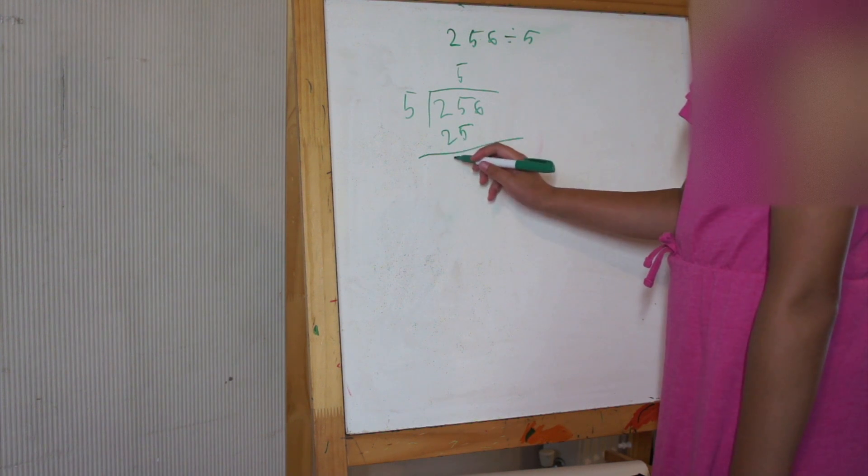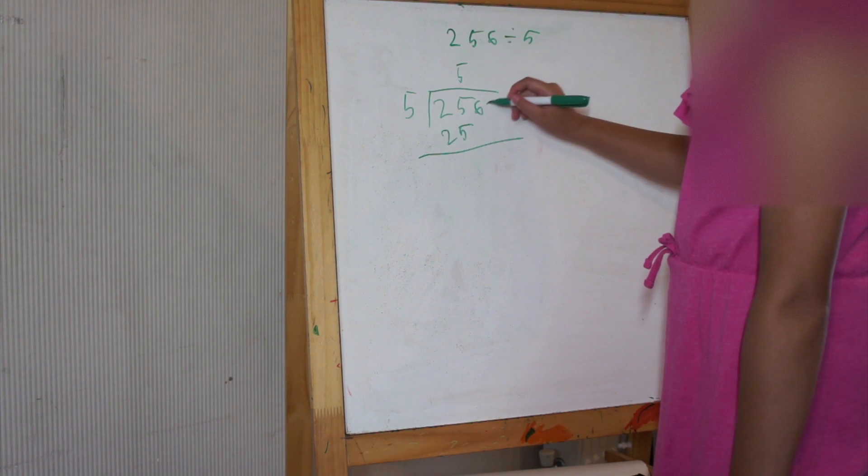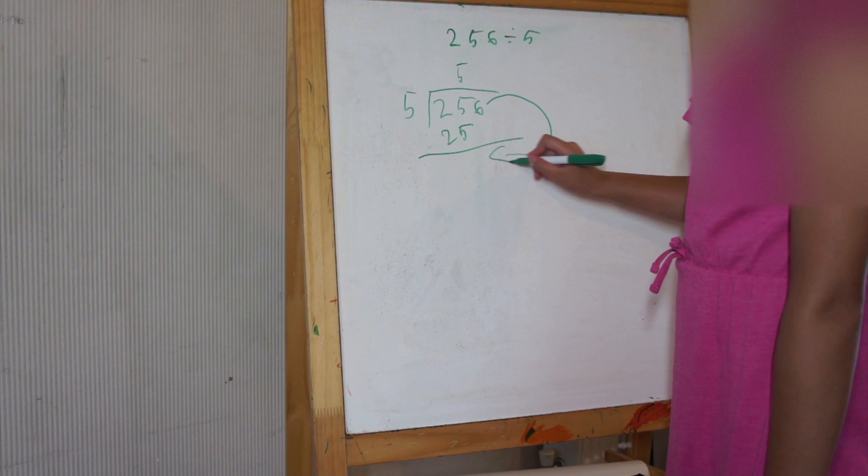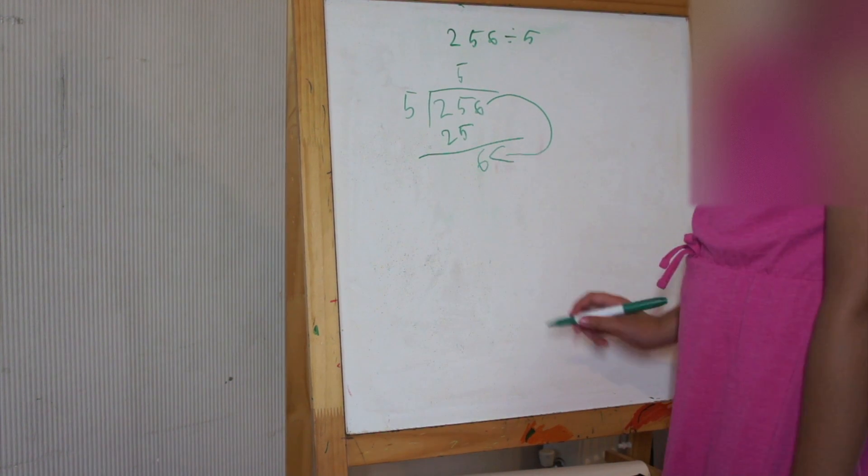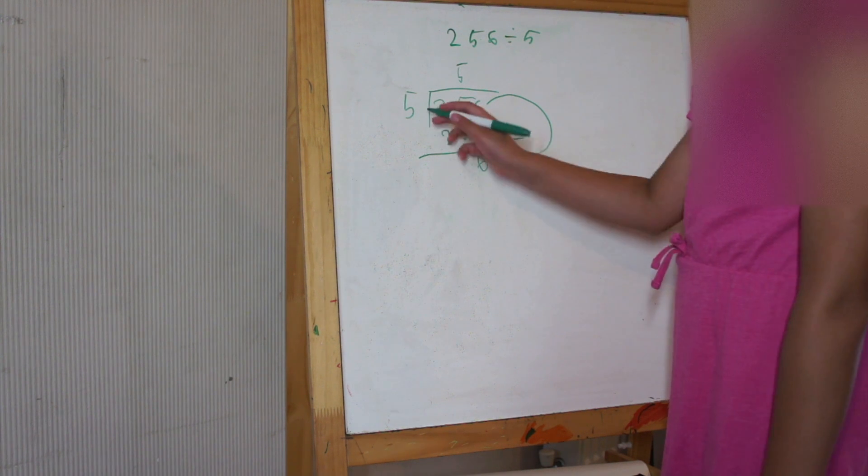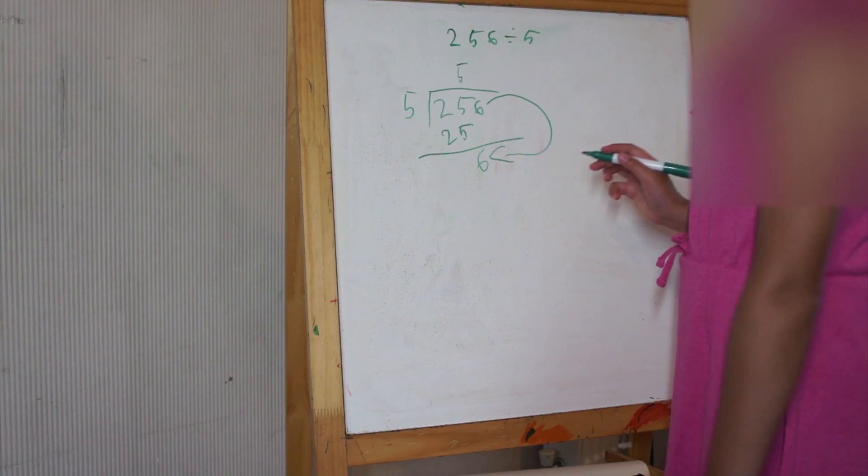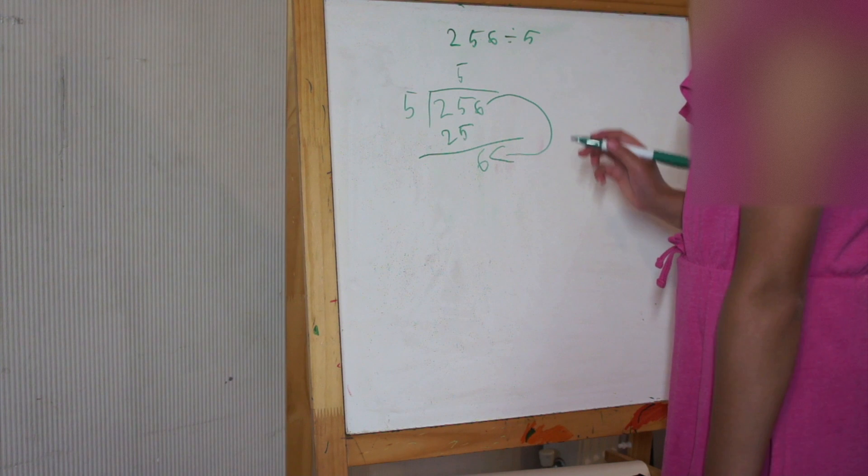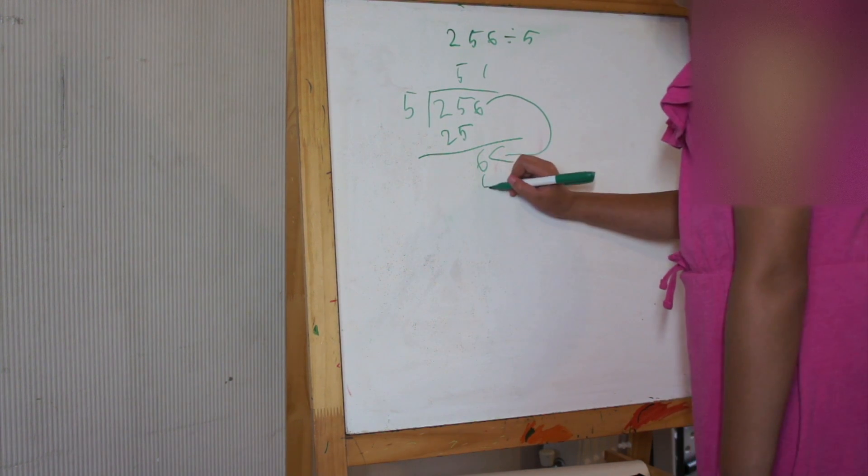And then we minus that, and then there's nothing else. So we grab the 6 and we make it over here. 5 times what equals 6? 6 is larger than 5, and 5 cannot make 6. So 5 times 1 equals 5.